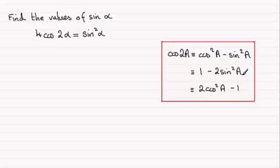So replacing the a with alpha, what we've got is therefore 4 times 1 minus 2 sine squared alpha is going to be equal to the sine squared alpha here.